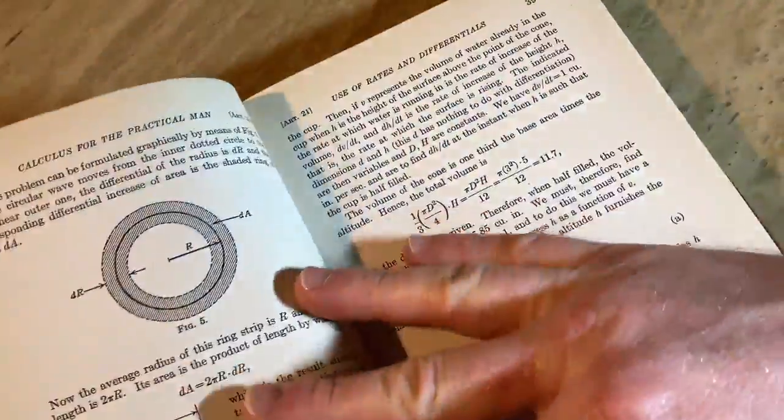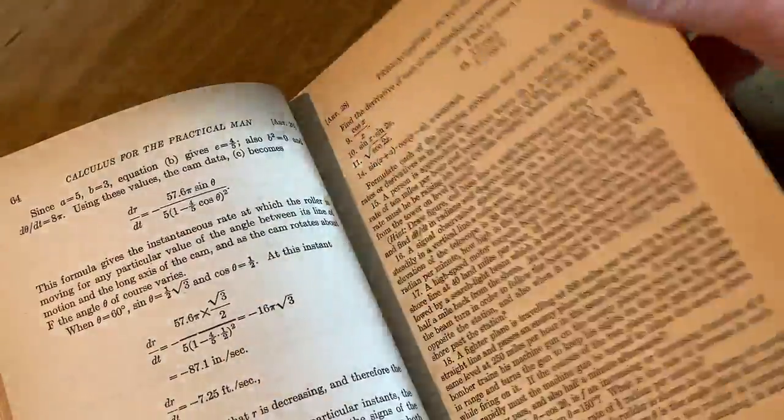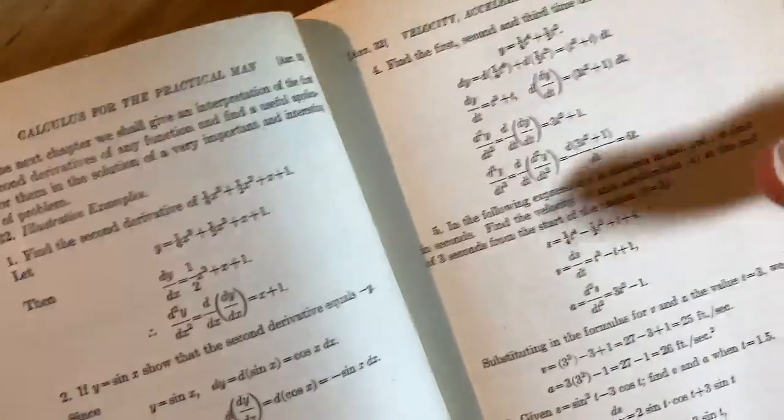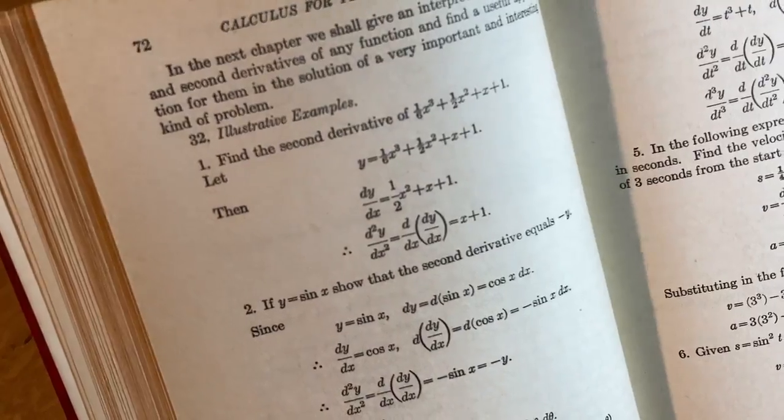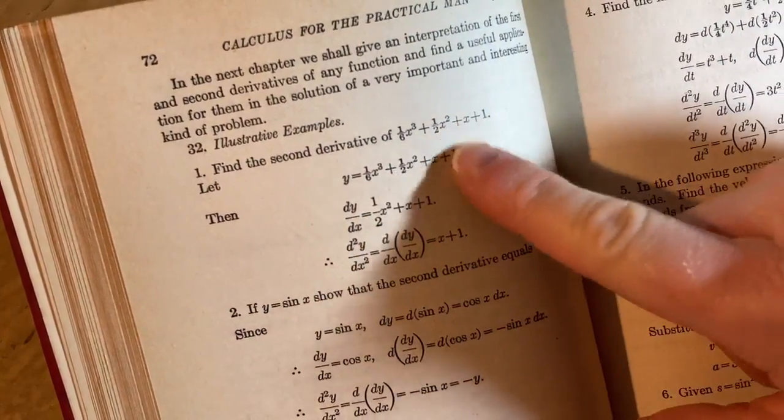Here he talks about rates. Let's jump ahead to something and just see what we find. Go here to, here we go, velocity and acceleration. Find the second derivative of, okay, so they give you here a polynomial function.